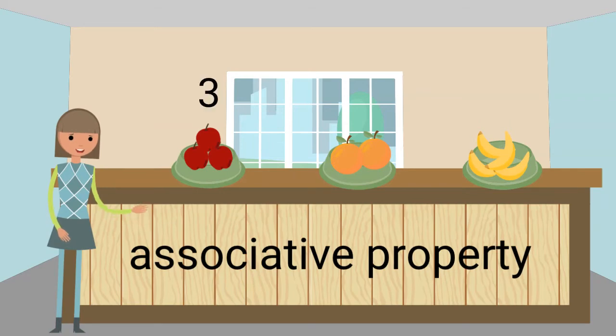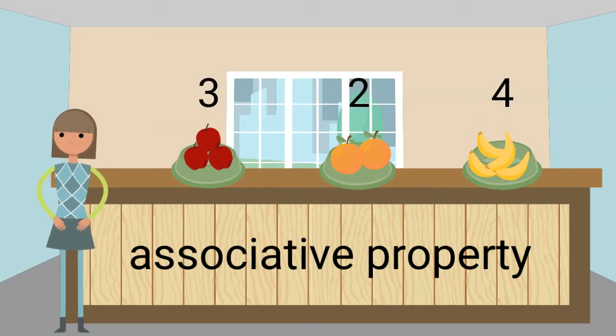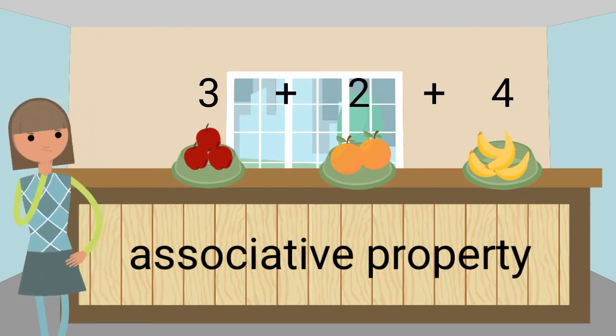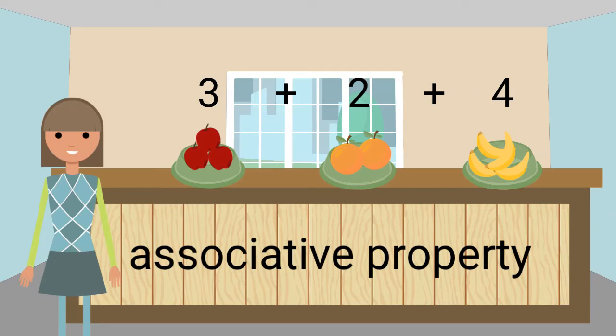In these bowls, there are 3 apples, 2 oranges, and 4 bananas. To find the sum, we can add 3 plus 2 plus 4. What is the sum? That's right! The sum is 9.